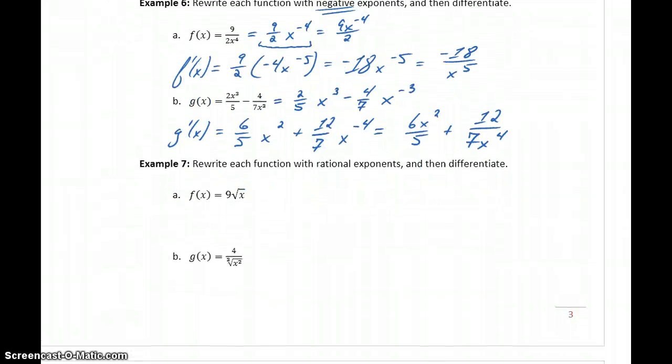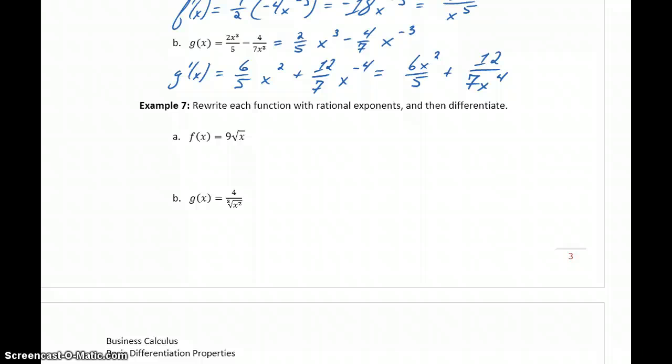So rewriting things with negative exponents is one trick to match these properties we've already established. Another is to take radicals and rewrite them with rational exponents. A function like 9 times the square root of x can be rewritten as 9x to the 1 half. Again, we have a simple power function to differentiate.